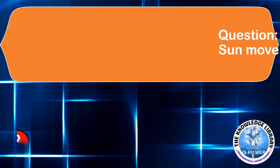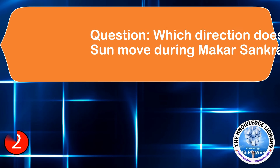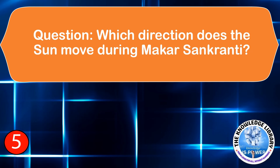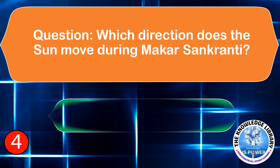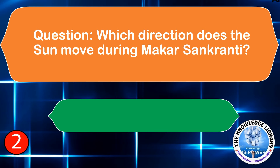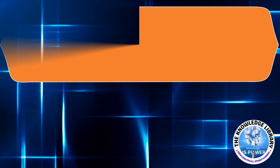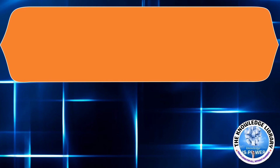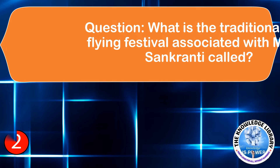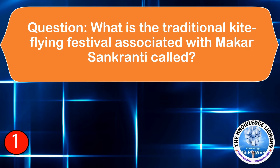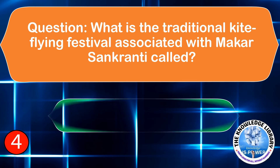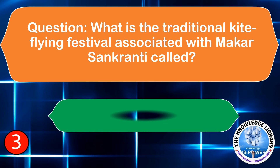The next question is: Which direction does the sun move during Makar Sankranti? The answer is north. The next question is: What is the traditional kite flying festival associated with Makar Sankranti called? The answer is Uttarayan.